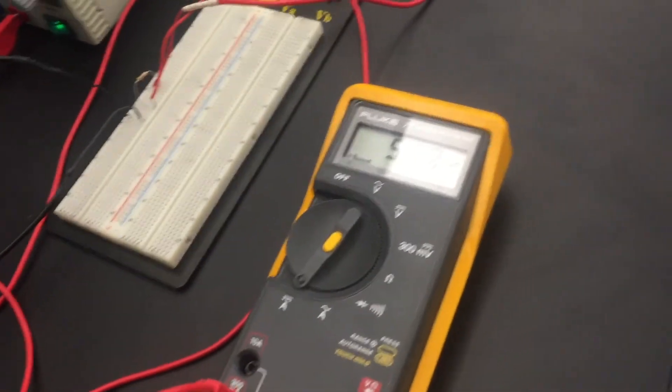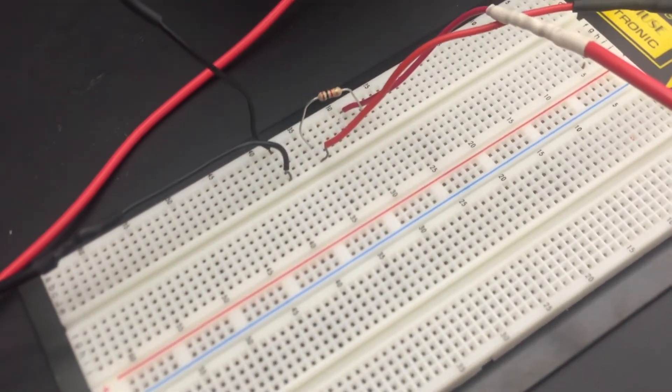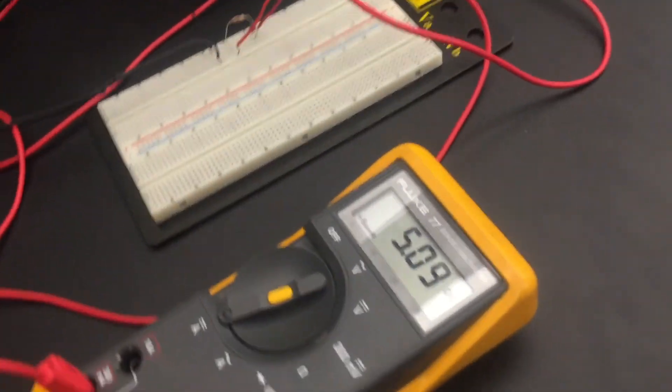So here we have the multimeter attached to the power supply in series to act as an ammeter. The ammeter is reading the current as five milliamps because there is a five volt output from the power supply with a one kilo ohm resistance, so it is reading the current correctly.